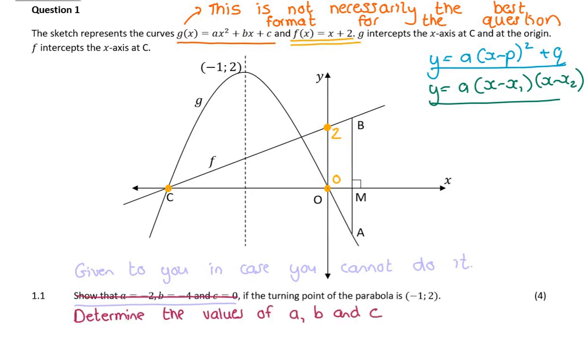So you should always read the question. What I've done there is I've crossed out the question. You should actually rather read it as determine the values of a, b, and c. And then once you've done that, you can use the values they gave you if you're struggling.